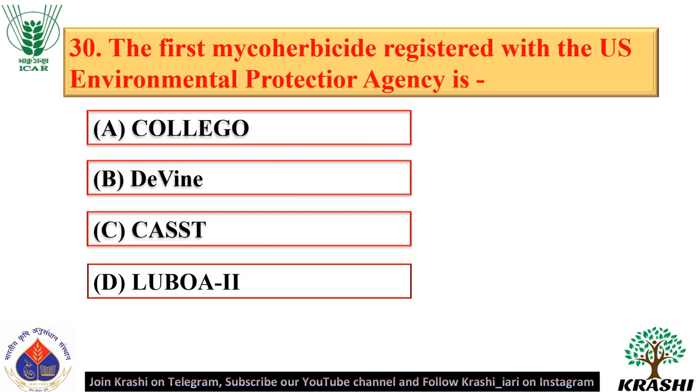Question number 30. The first mycoherbicide registered with the U.S. Environmental Protection Agency is DeVine — option B.